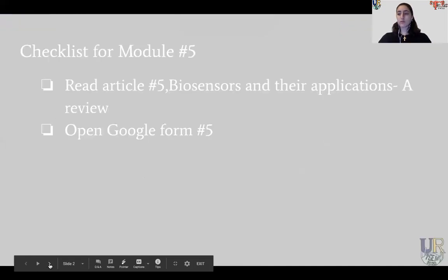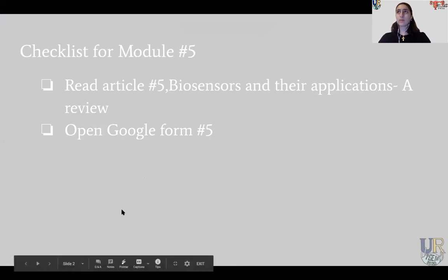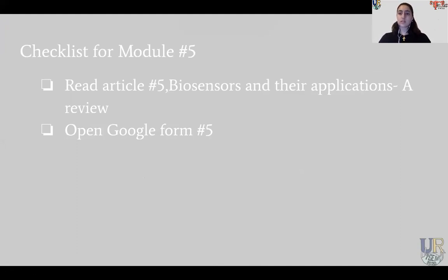For this module, prepare by reading the paper about biosensors and their applications. This paper briefly discusses the different types of biosensors and how they're applied in different fields. It focuses on an interesting array about how they're applied in food, drug production, and ecology. Also please open the Google Form for module 5 so you can fill in the necessary questions when needed.